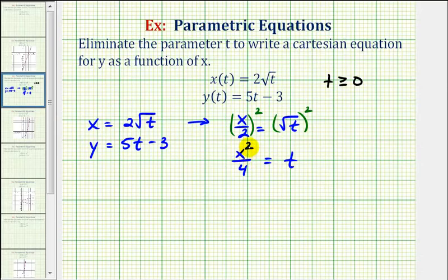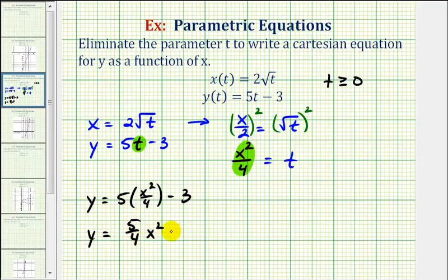Which means now we can substitute x squared divided by four for t in the second equation. And this will eliminate the parameter t. We're going to have y equals five times x squared over four minus three. So y as a function of x is y equals five fourths x squared minus three.